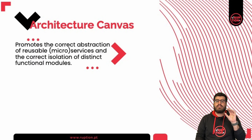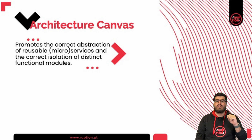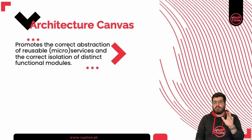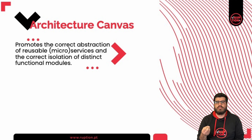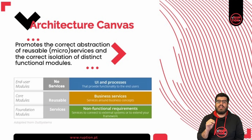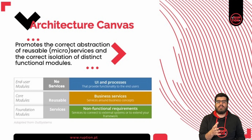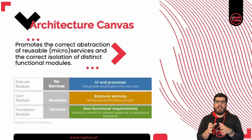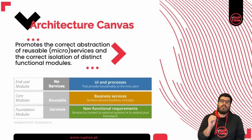The first step is looking at the Architecture Canvas. The Architecture Canvas is an OutSystems architecture tool to help you make your design simple. It promotes the correct abstraction of reusable micro services and the correct isolation of distinct functional modules. The canvas is divided into layers and sub layers. For OutSystems version 11, there are three layers: the end user, core, and foundation layers. These will define the most abstract part of your application.